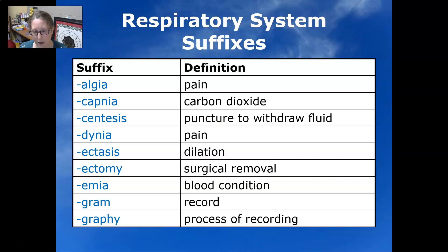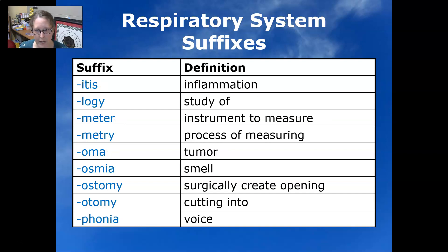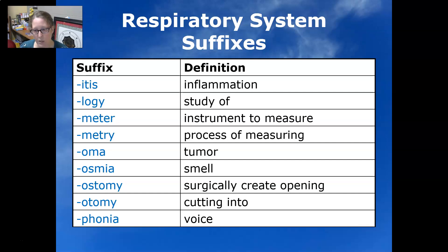Gram is a record and graphy is a process of recording. Itis is inflammation. Logy is study of. Meter is the instrument to measure and metry is a process of measuring. Oma is tumor. Osmia is smell. Ostomy is to surgically create an opening and otomy is cutting into. Phonia is voice.